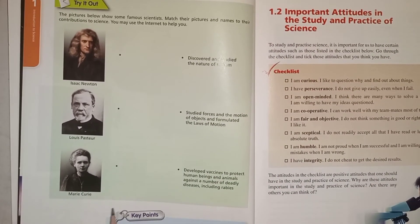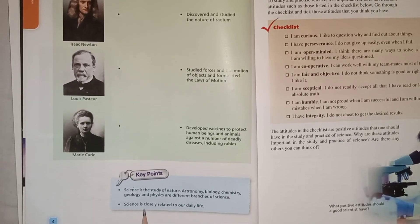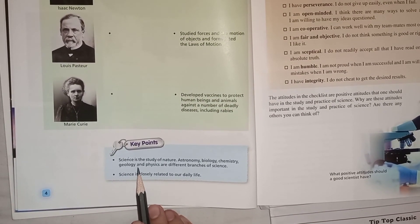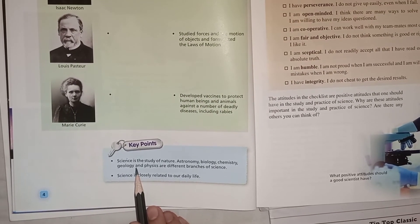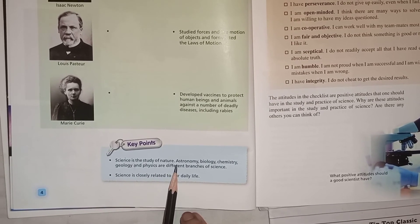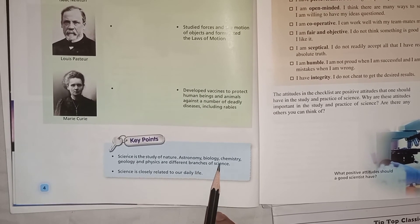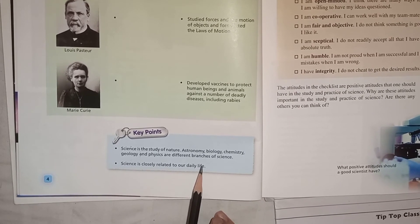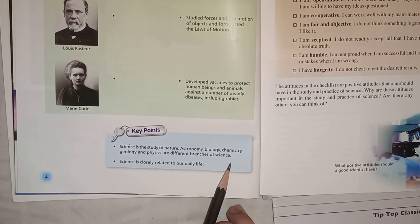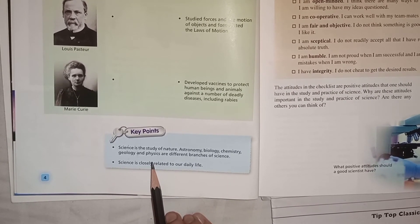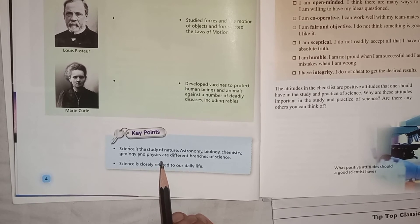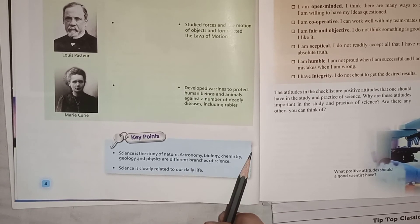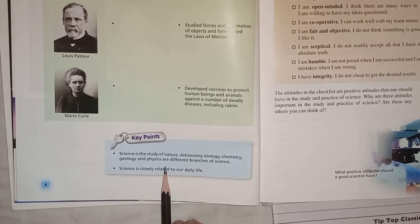Let me highlight the key points we have learned in today's video. Science is the study of nature. Astronomy, biology, chemistry, geology, and physics are the different branches of science. As I taught you about the nature of science and its branches — astronomy, biology, chemistry, geology, and physics.